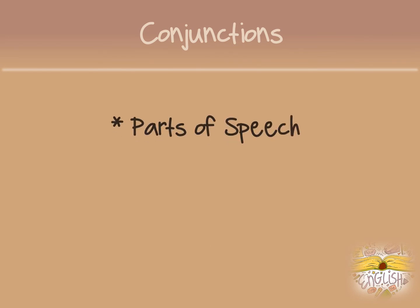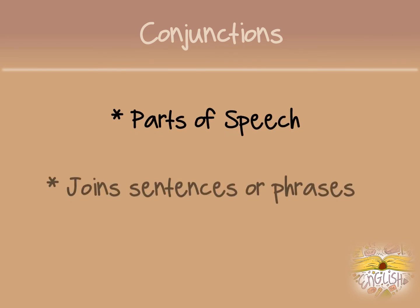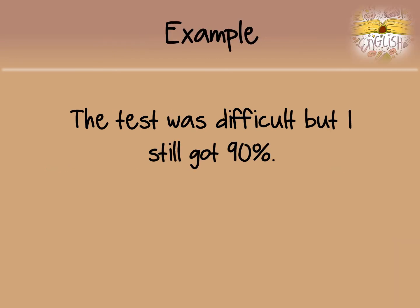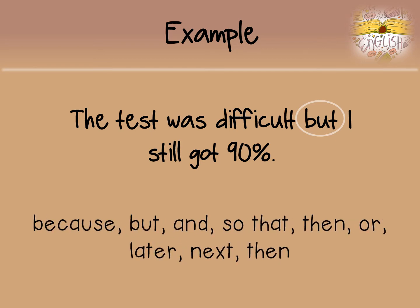Conjunctions are also parts of speech. They are used to join sentences or phrases. For example, 'The test was difficult, but I still got 90%.' The word 'but' is the conjunction in that sentence. Other examples are words like: because, and, so that, then, or, later, next, and then.